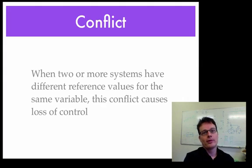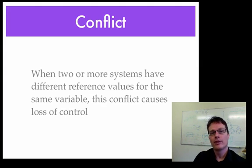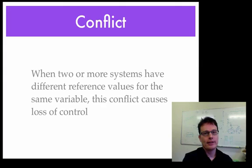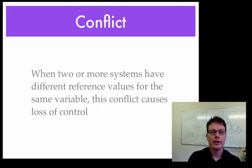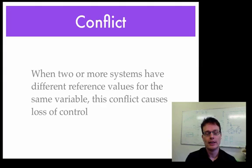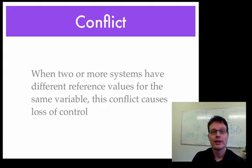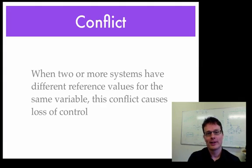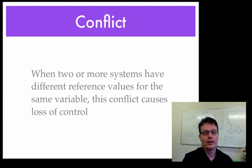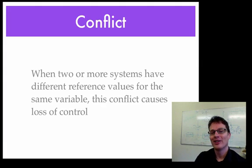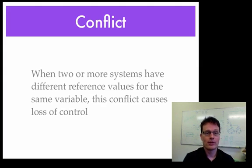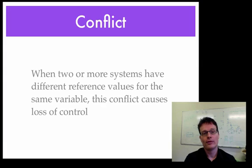Conflict is another principle described in early work and other areas of psychology. In PCT it has a very distinct meaning. It is when two or more control systems have different reference values for the same variable, meaning that they have opposing goals for a certain experience. This is in PCT the cause of conflict and in turn conflict causes loss of control. There are other causes of loss of control too, but conflict is seen as one of the major reasons.